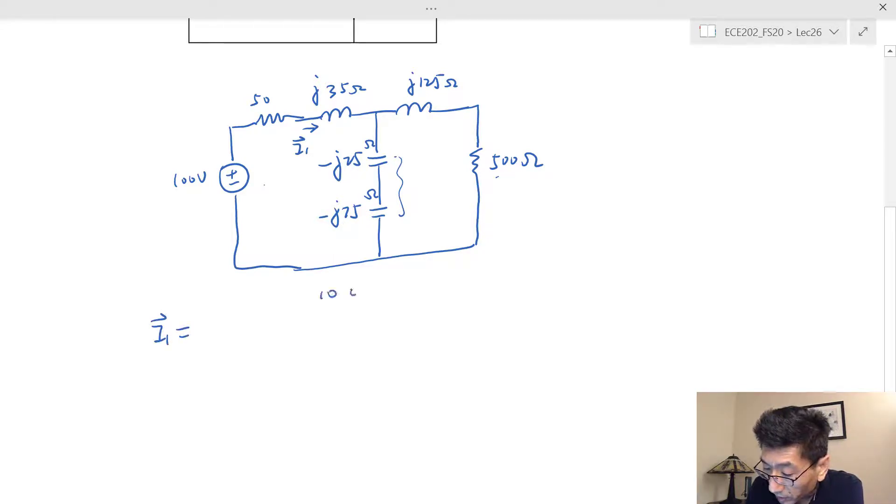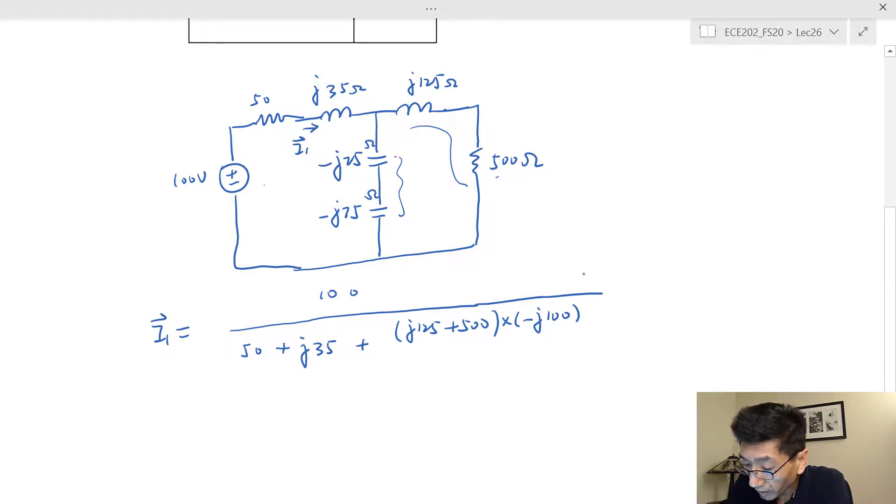I'm going to write this equation directly. i1 is going to be equal to 100 divided by the equivalent impedance. That's the 50 in series with the j35, plus the parallel of these two impedances. For the parallel, I can use the product over the sum: (j125 + 500) times negative j100. Negative j100 is negative j25 minus j75, divided by the sum, which is j125 + 500 - j100. If you calculate this, it's exactly equal to 0.04 at 33.3 degrees.